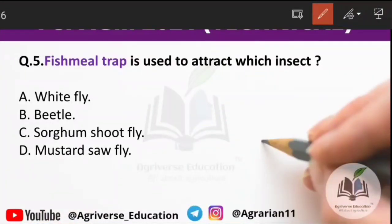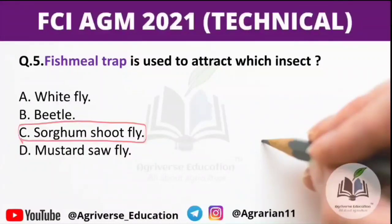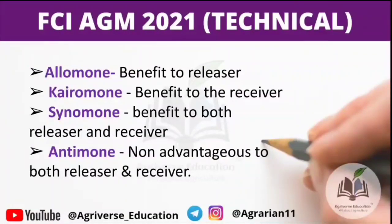Fifth question: fish meal trap is used to attract which insects? The right answer is option C — sorghum shoot fly. So, fish meal trap is used against sorghum shoot fly.